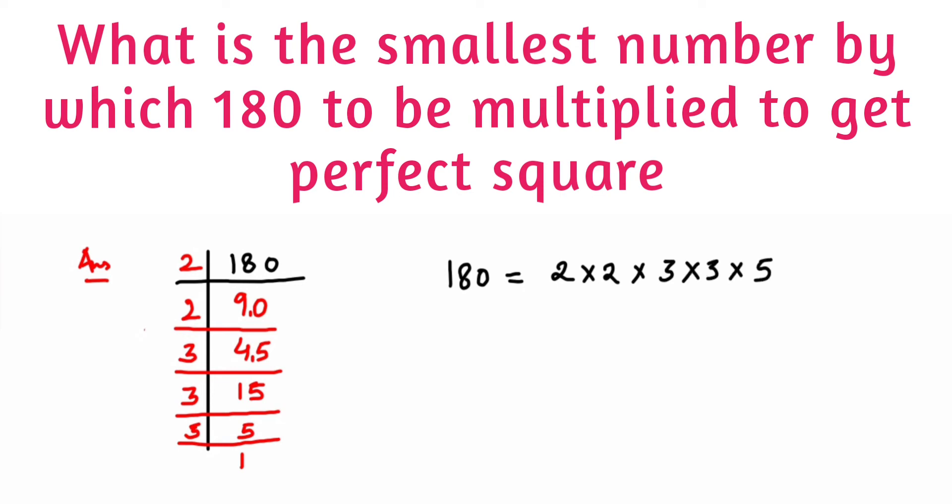Now it's clear that there is no pair for 5. 2 is forming a pair, 3 is forming a pair, but this 5 is single—it doesn't have any pair.